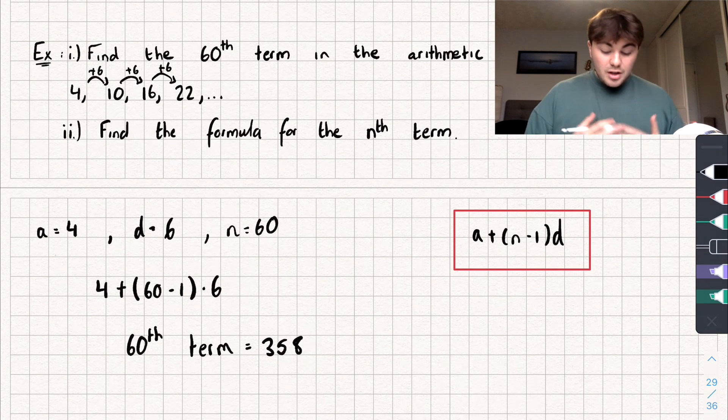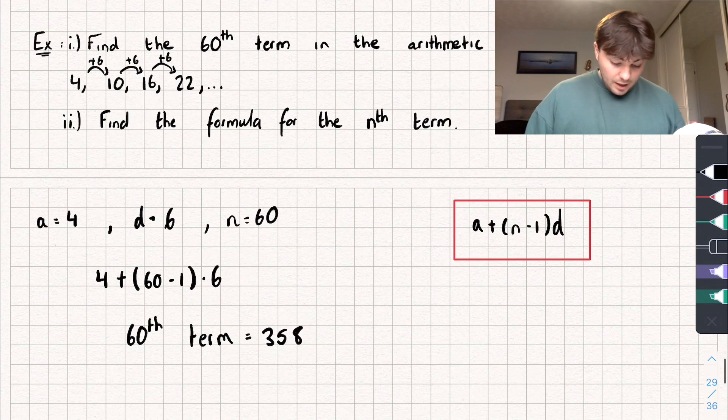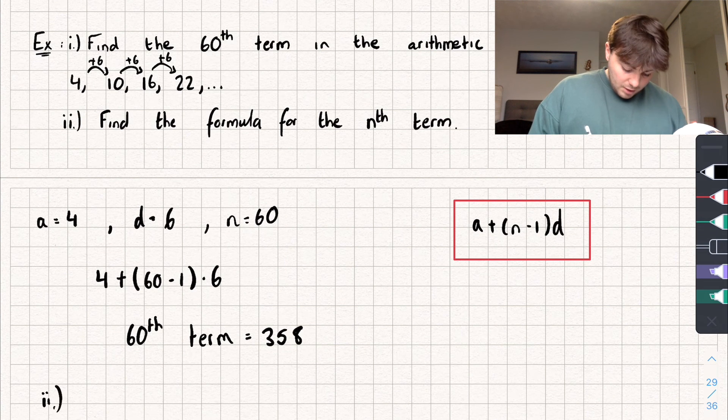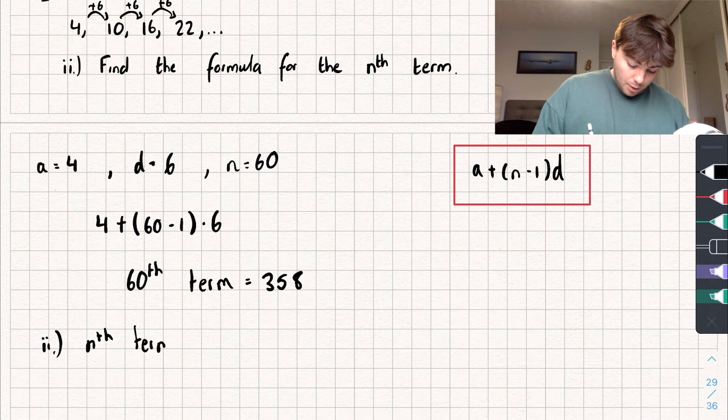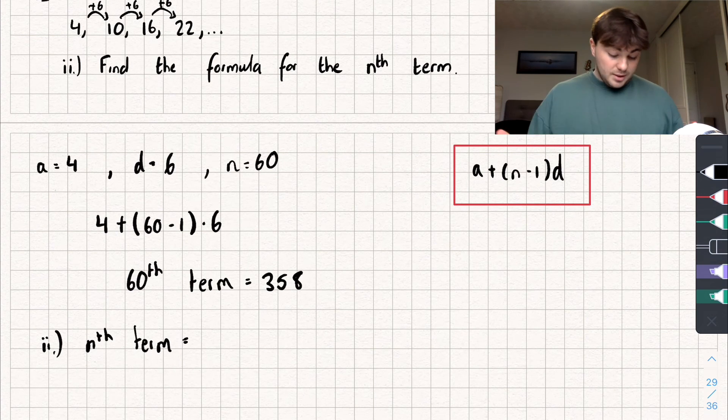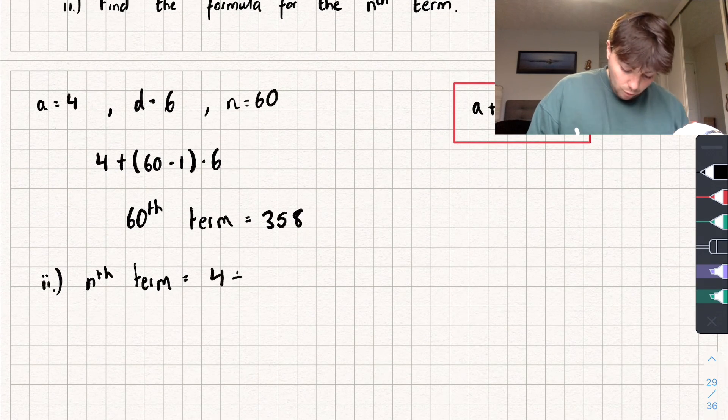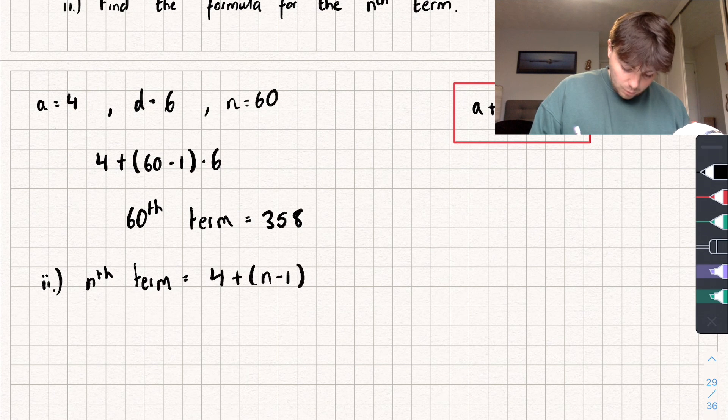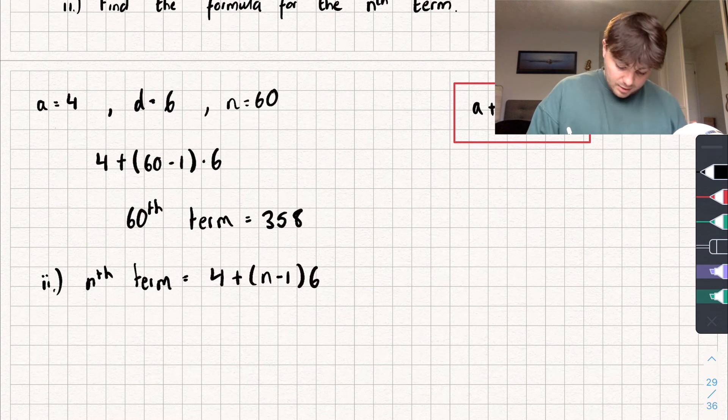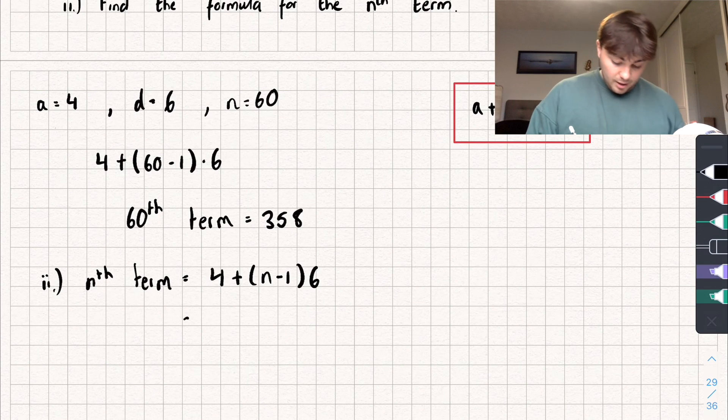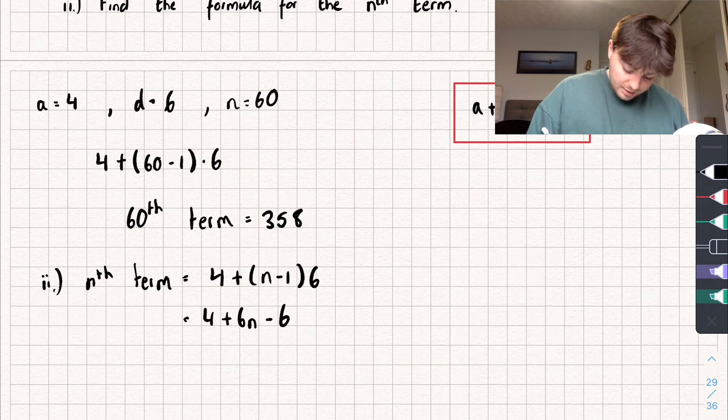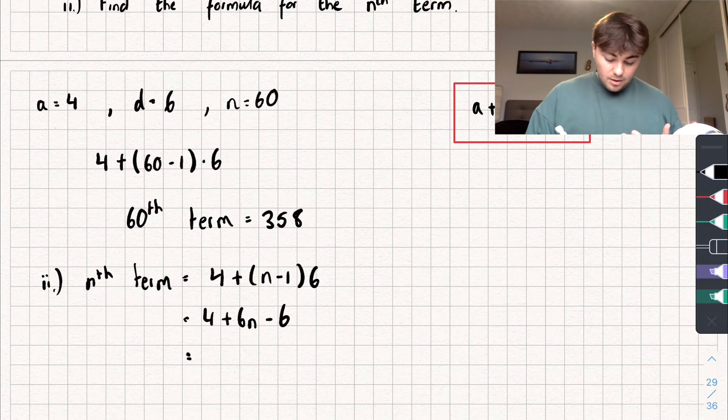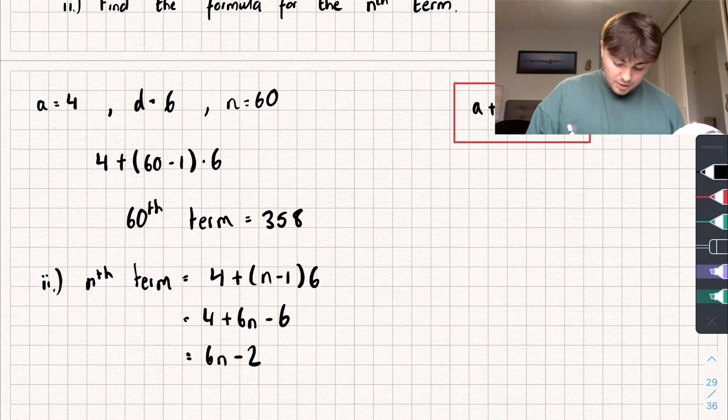The second part says find a formula for the nth term, okay, and this is also pretty easy to do. So let's write it like this. So the nth term is given by what's in that red box, and we know what a is and we know what d is, so let's substitute that in. So it's 4 plus n minus 1 multiplied by d, which is 6. And if we then expand that bracket, we would get 4 plus 6n minus 6, and simplifying we get an nth term of 6n minus 2.